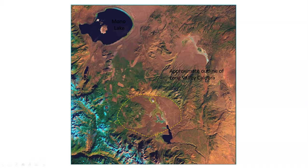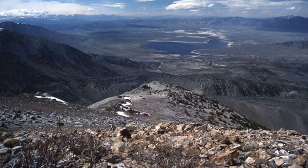Here is the approximate outline of the caldera. Mono Lake is here, Yosemite Valley is over here, and this is Lake Crowley — giving you a sense of the scale of the caldera.